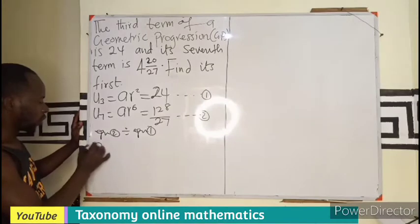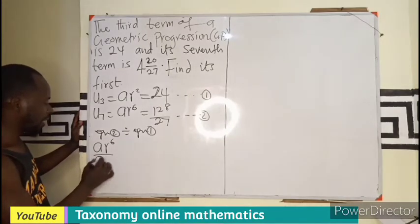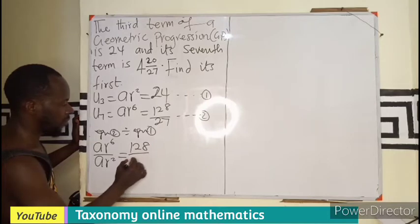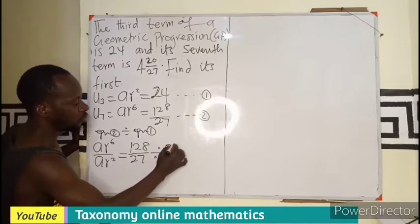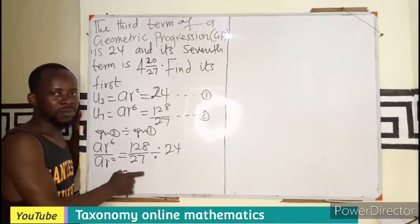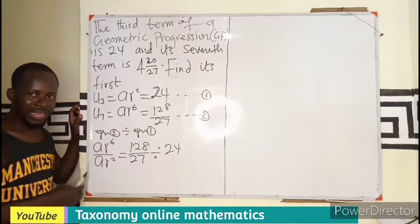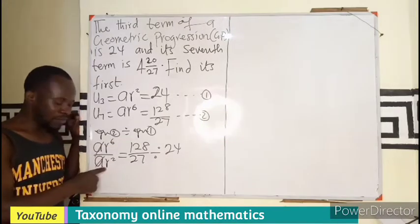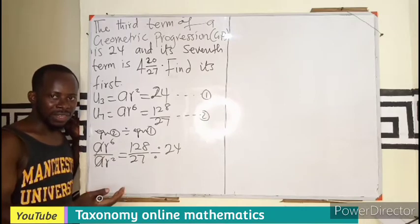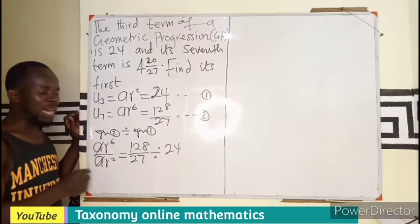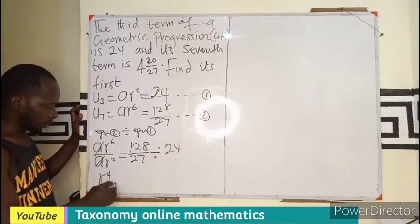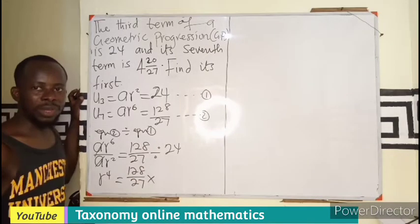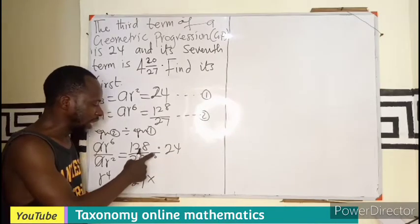That means equation 2, ar⁶ divided by ar², equals to 128 over 27 divided by 24. I didn't want to get a double division so I will use the division sign. We know that if I am dividing a number by itself it cancels. Then ar⁶ divided by ar², we enter into indices, we have the same base so we subtract the exponent.